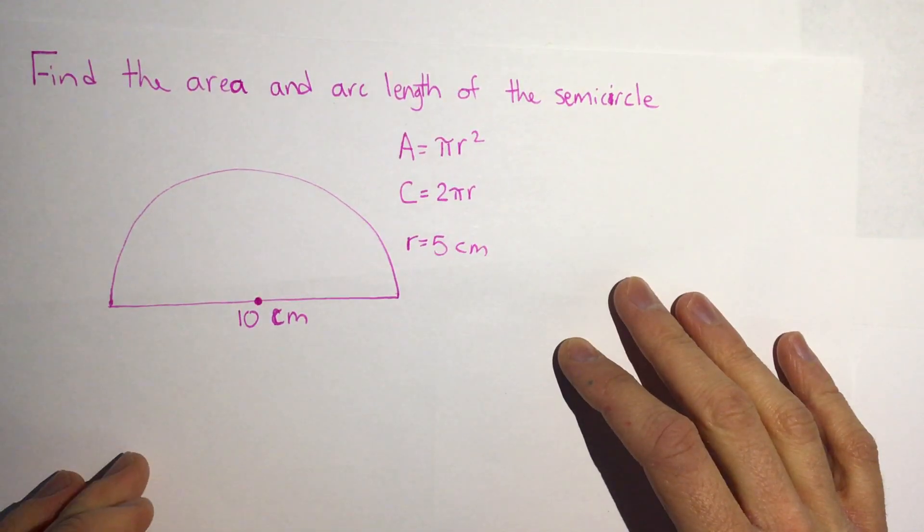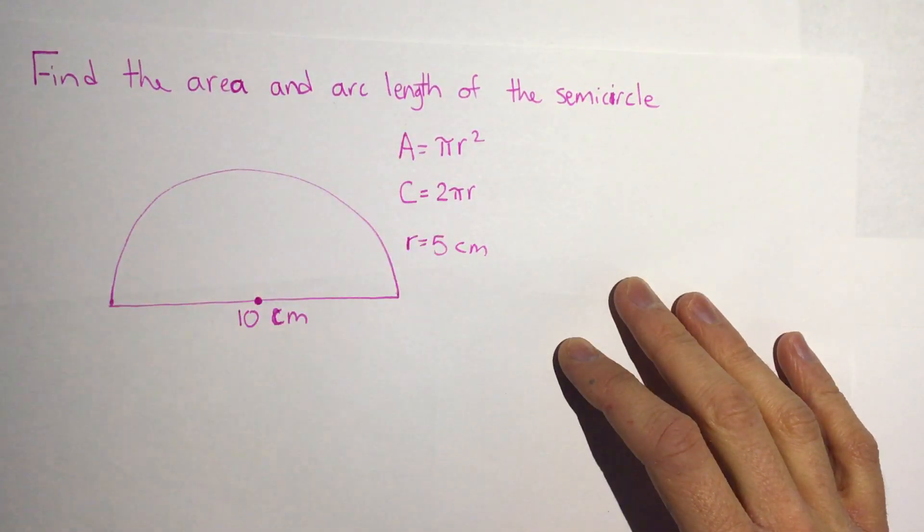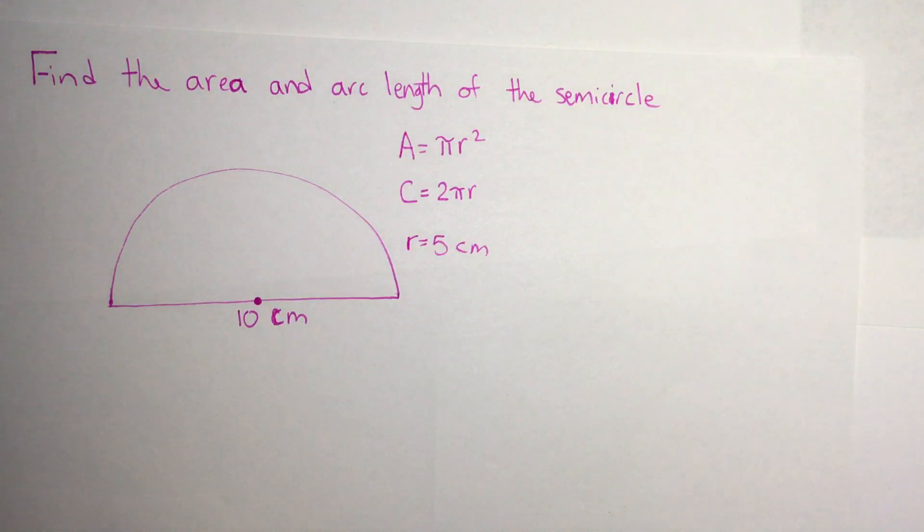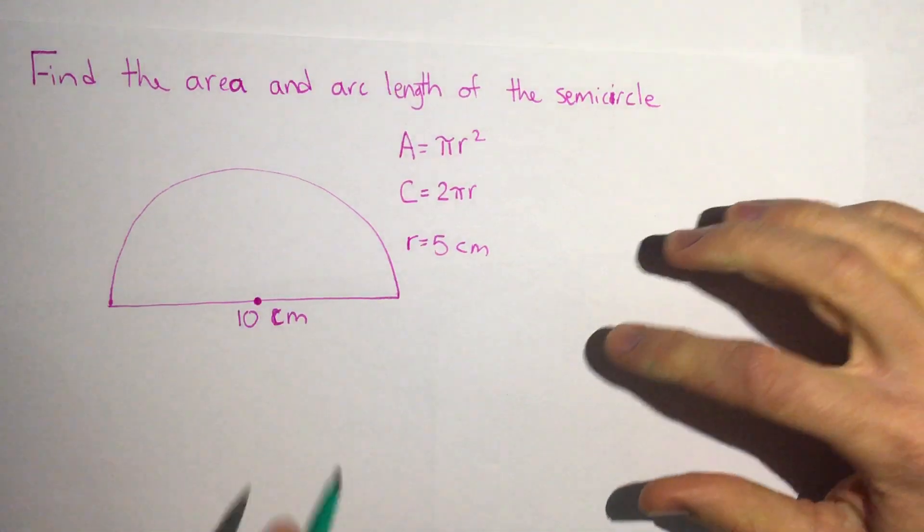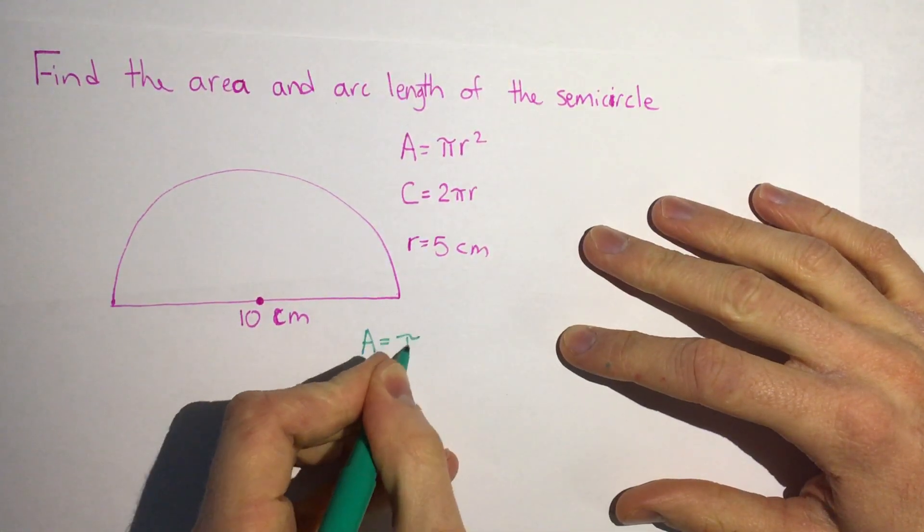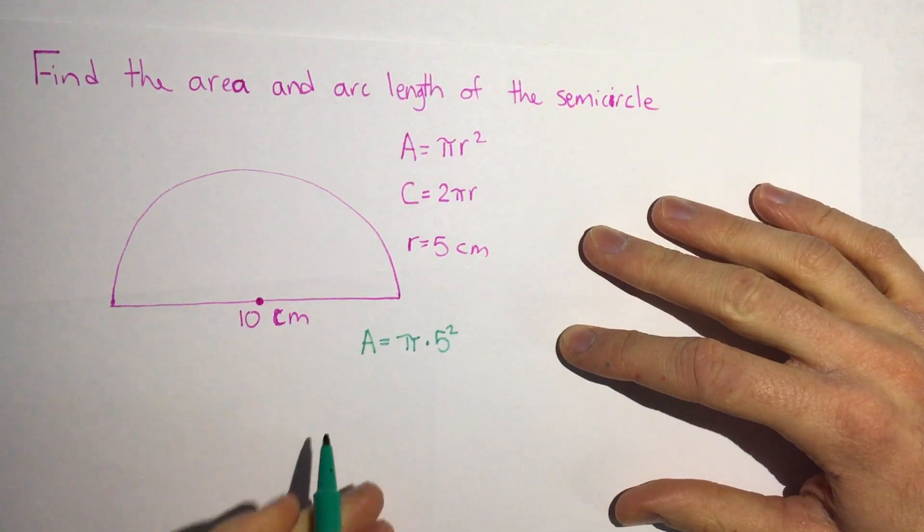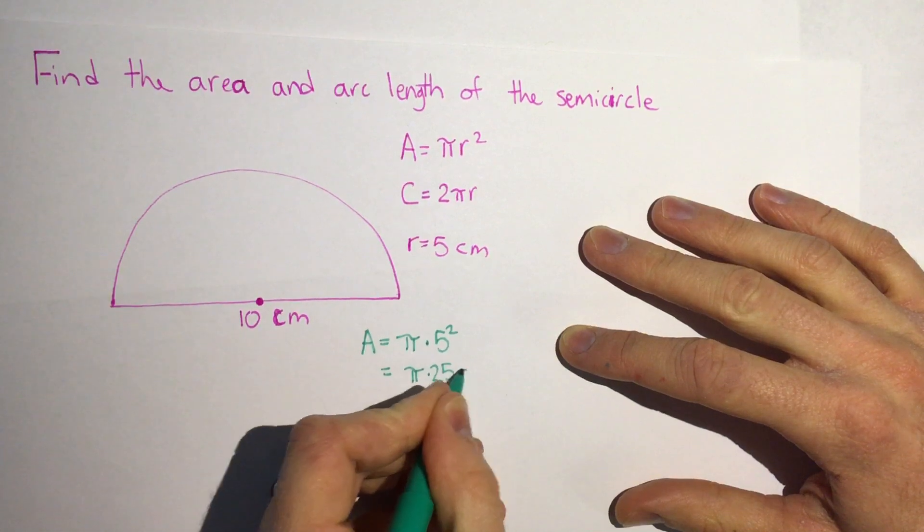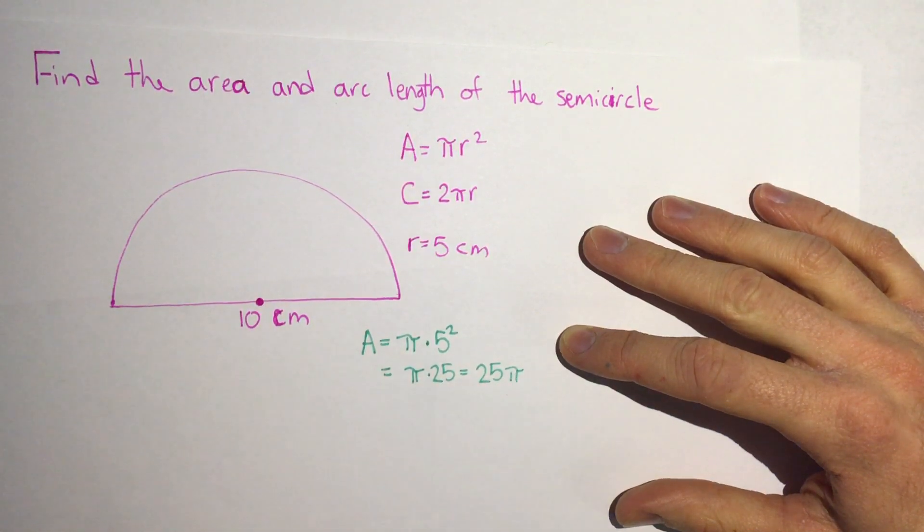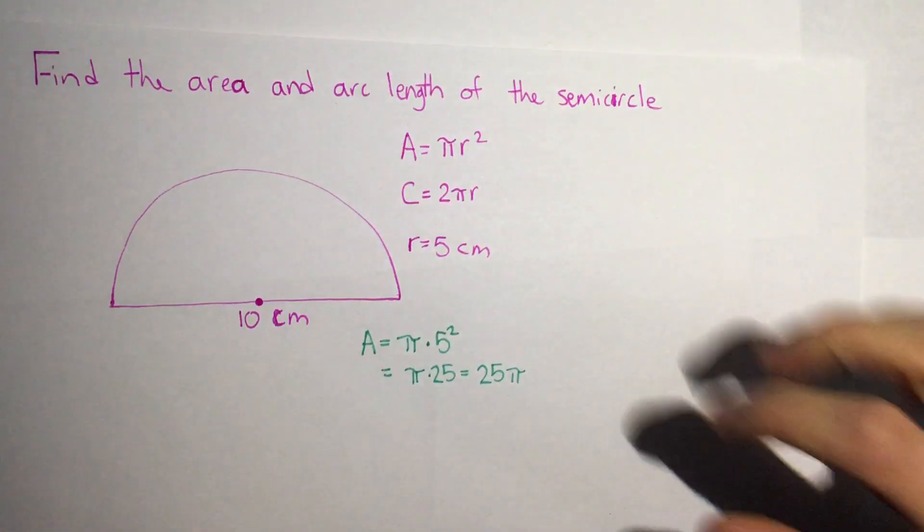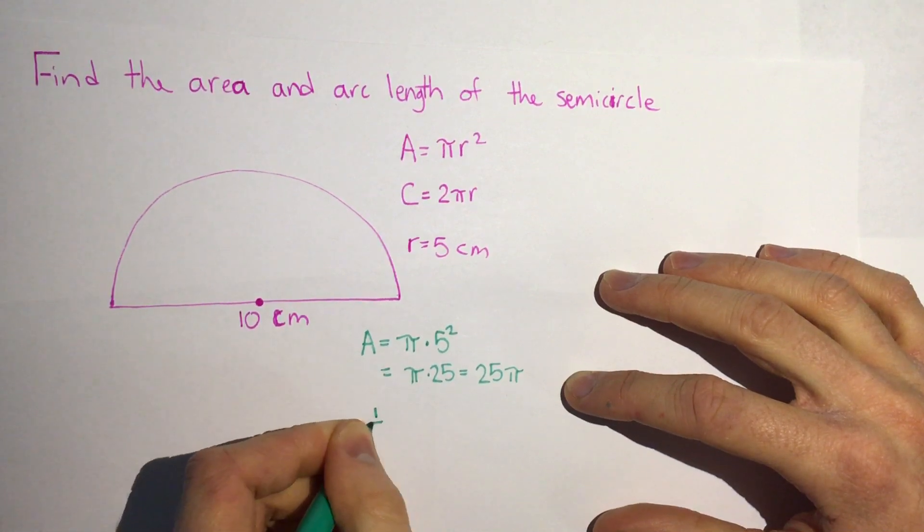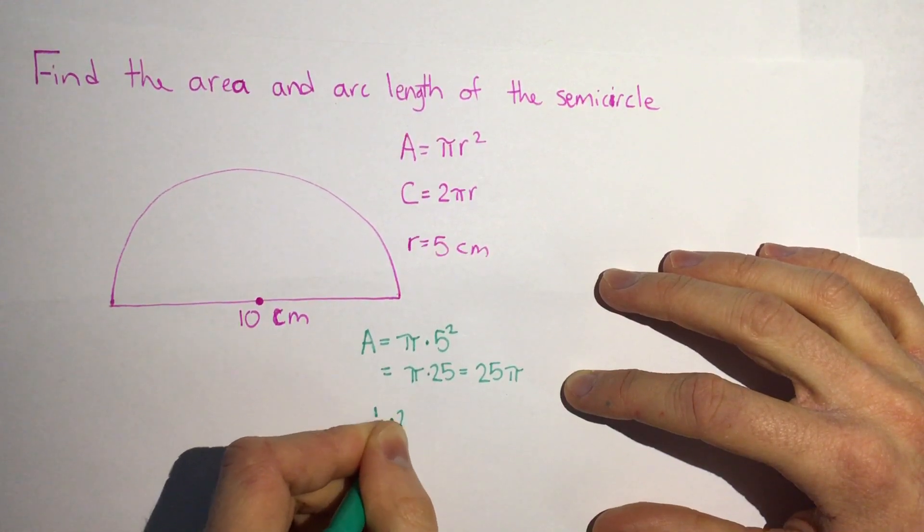Now if we're going to figure out the area of a semicircle the easiest thing to do is just figure out what is the area of the whole circle. So to do that we will plug in 5 for r, the area is pi times 5 squared which is pi times 5 times 5 so pi times 25 or 25 pi. Now since this is half of a circle we're going to take that and multiply it by 1 half. So 1 half times 25 pi.